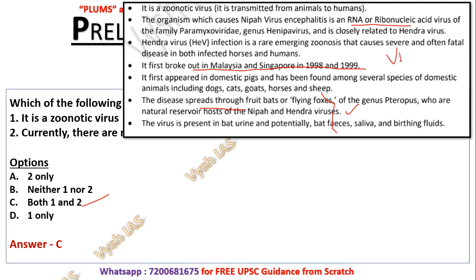There is a movie called 'Virus' based on the Nipah outbreak in Kerala — you can find it on YouTube, also dubbed in Hindi. Nipah is transmitted through fruit bats and flying foxes, which are the reservoir hosts. If you disturb them in the forest, the virus spreads from one person to another very rapidly, and there is no known treatment — it causes direct death.